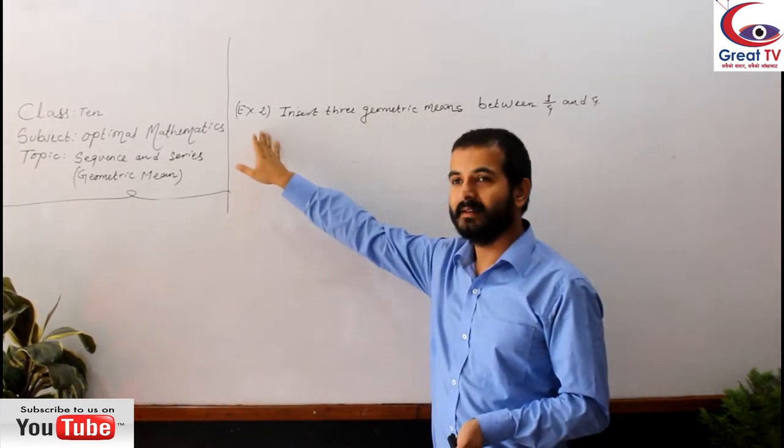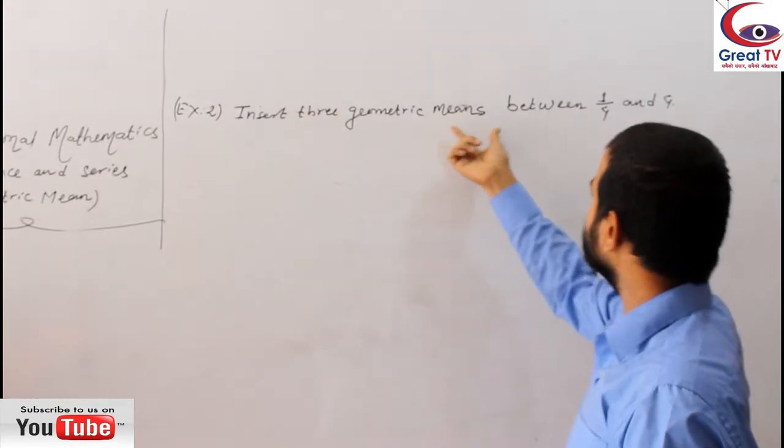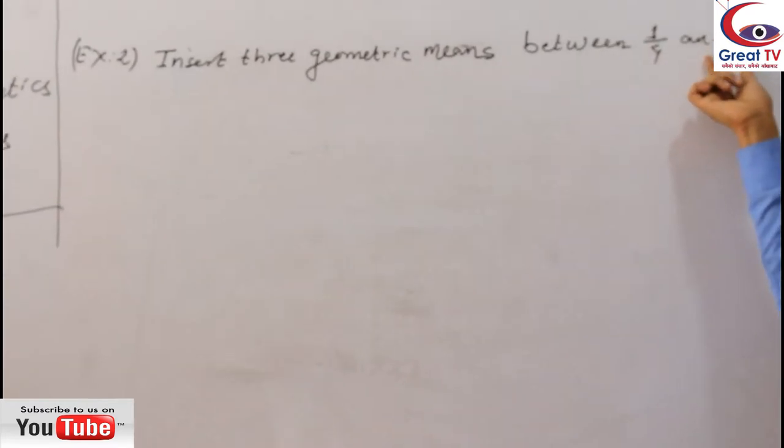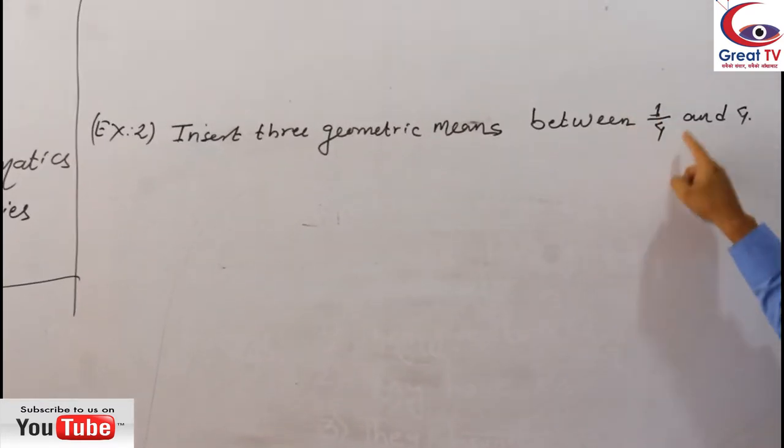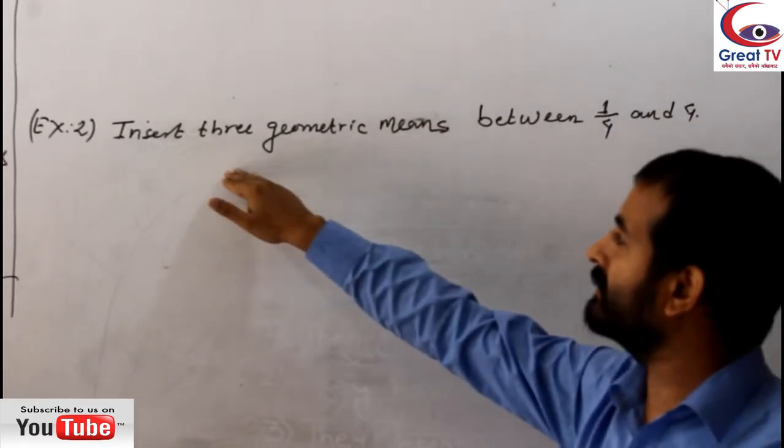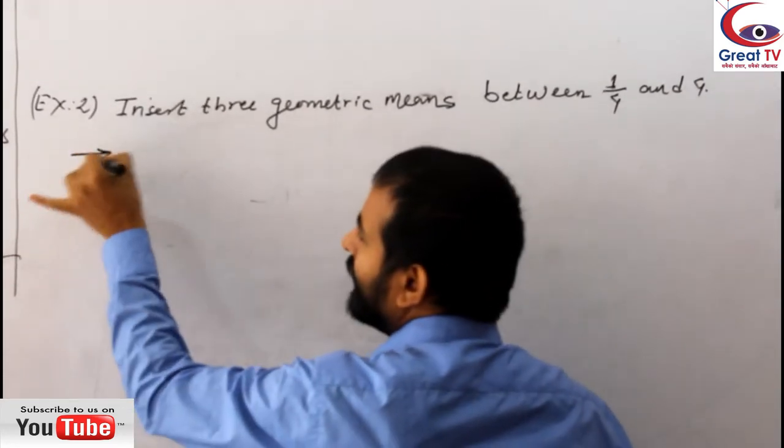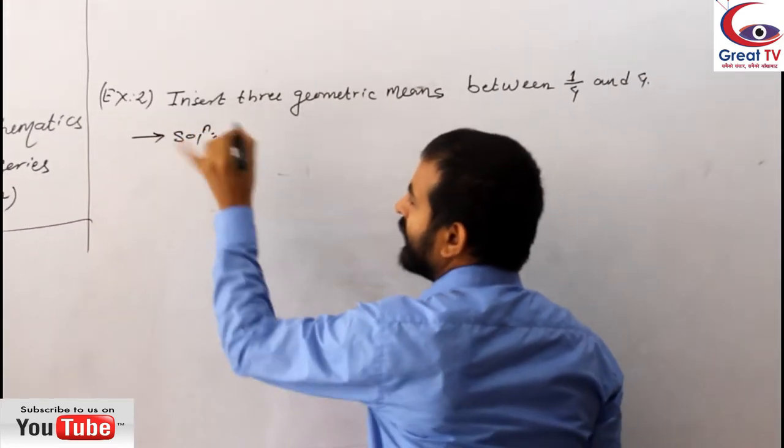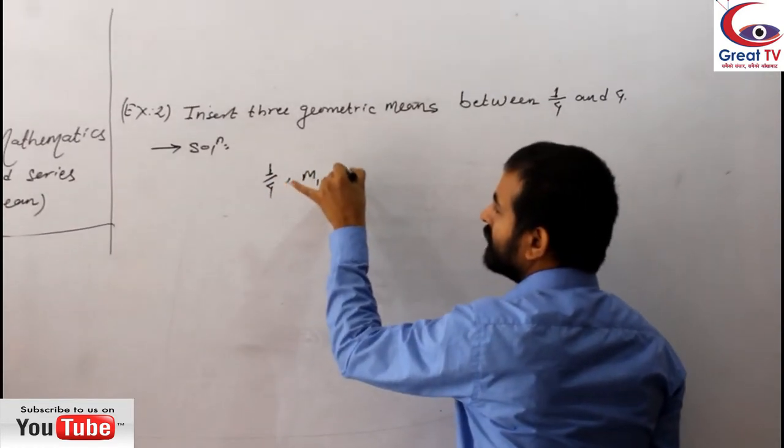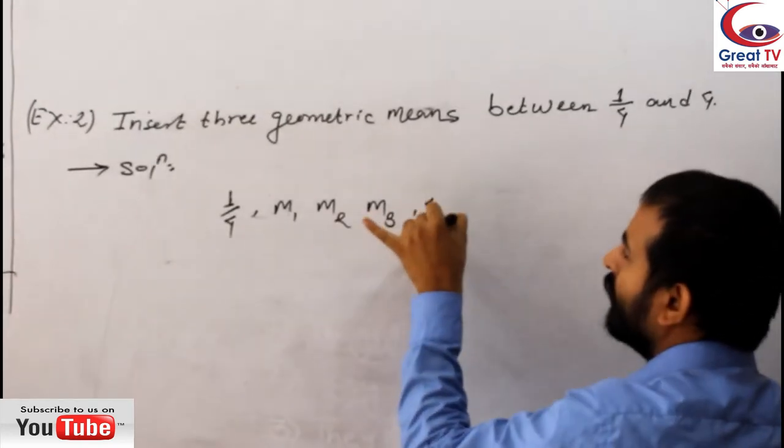So my dear students, please focus on the question here: Insert 3 geometric means between 1/4 and 4. So 1/4 is the first number, 4 is the last number of the series, and there are 3 geometric means inside them. So it means we can interpret the equation like this: 1/4, first mean, second mean, third mean, and 4 is the last.